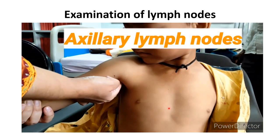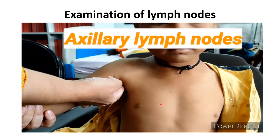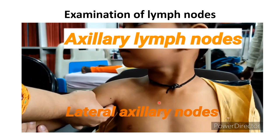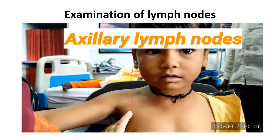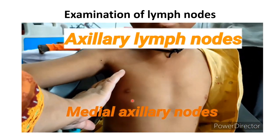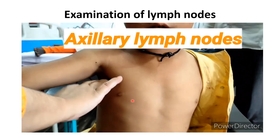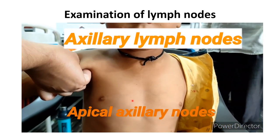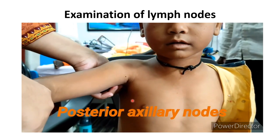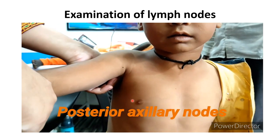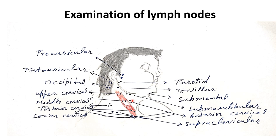Now the axillary lymph node — anterior axillary, lateral axillary, and medial axillary lymph nodes should be palpated, then apical axillary, then posterior axillary lymph node. In this image you can see the various cervical lymph nodes.